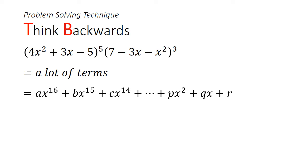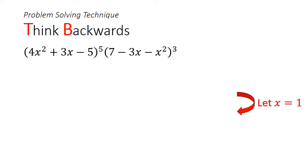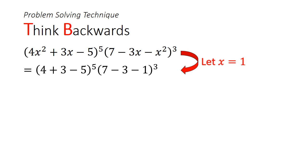It really doesn't matter when we substitute x equals 1. We could plonk it right at the start. By doing at the beginning, we skipped all the expansion, and after evaluation, the sum of the coefficients will be 864.